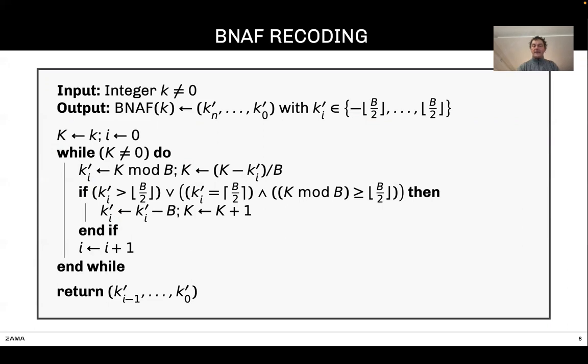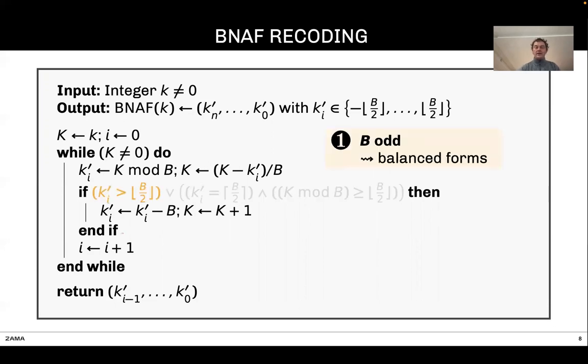Let's take a look at special cases. First, when B is odd, the ceiling of B/2 is covered by that case. In that case, the condition becomes simpler. This is actually the way to get the balanced form for B being odd.